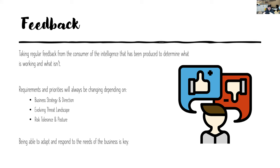That information should come back and close the loop — what we call the feedback loop. Requirements and priorities are always going to change. From a threat intelligence perspective, we need to be able to adapt and respond to the needs of the business. With the ever-evolving threat landscape, that could change the way an organisation reacts to protecting itself, its customers, how it goes to market, and how it approaches certain circumstances.